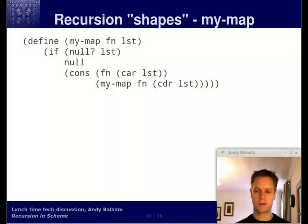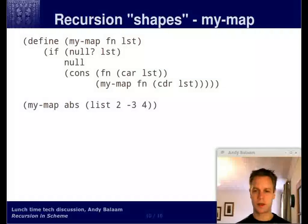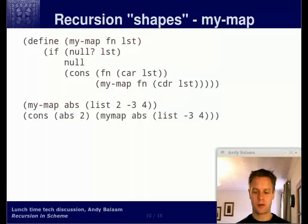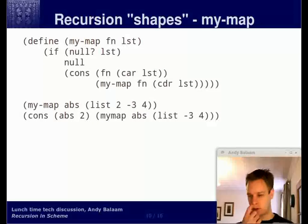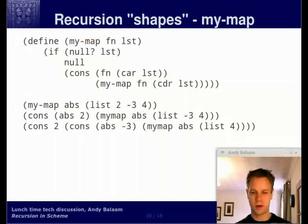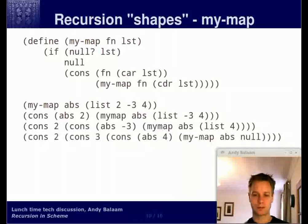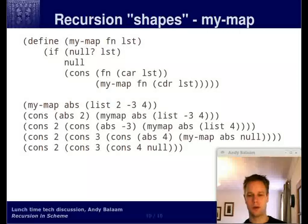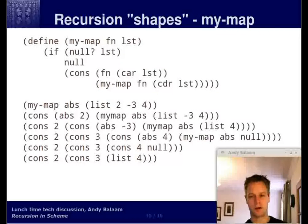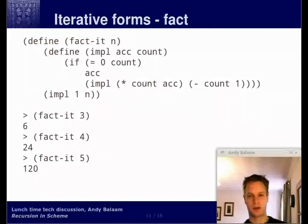Let's look at the shape of the myMap function. Imagine calling myMap with the list of 2, minus 3, and 4 and the abs function. You cons together abs of 2 and myMap of the shorter list. Abs of 2 is 2, then that myMap call becomes cons of abs of minus 3 and the rest. So now we're consing 2 with consing 3 with consing abs of 4 with calling myMap with the empty list. MyMap with the empty list returns null, abs of 4 is 4. We cons 4 with null to get a list of 4, cons 3 to get a list of 3 and 4, cons 2 and we're all done. The shape of myMap is again a triangular shape — it gets wider and then thinner.